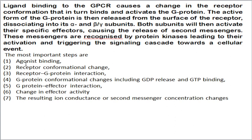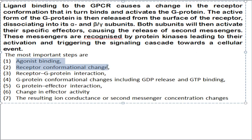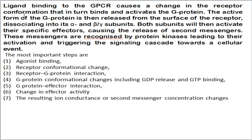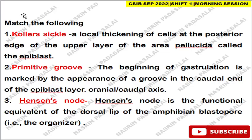The next question is about GPCR signaling. The key steps are: (1) ligand binding, (2) conformational change in the receptor, (3) receptor-G protein interaction, (4) G protein conformational change, (5) G protein-effector interaction, (6) changes in effector activity, and (7) altered ionic conductance or secondary messenger levels. Once ligand binding activates the G protein, the alpha subunit dissociates from the beta-gamma subunits, activates specific effectors, releases secondary messengers, which are then recognized by protein kinases, triggering the signal cascade and a cellular response.